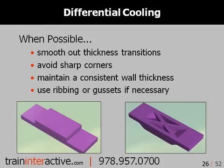So whenever possible, smooth out the thicknesses and transitions, avoid sharp corners, maintain a consistent wall thickness, and use ribbing or gussets if necessary.